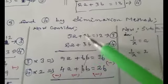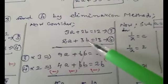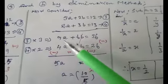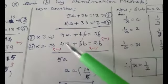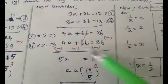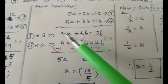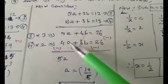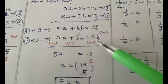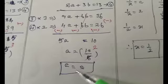To find 'a', write equations 3 and 4 again. Multiply equation 3 by 3 and equation 4 by 2, giving 9a + 6b = 36 and 4a + 6b = 26. Since both '+6b' terms are the same sign, subtract: 9a − 4a = 5a, 6b − 6b cancels, 36 − 26 = 10. So a = 10/5 = 2.